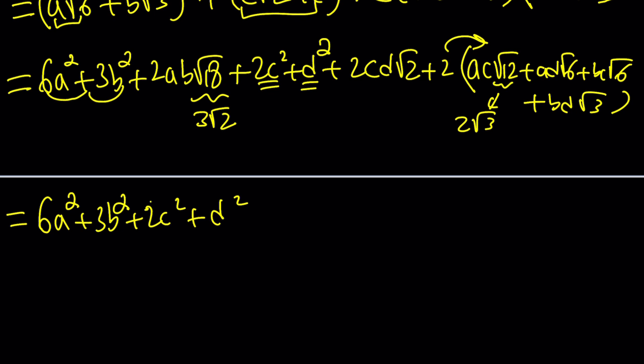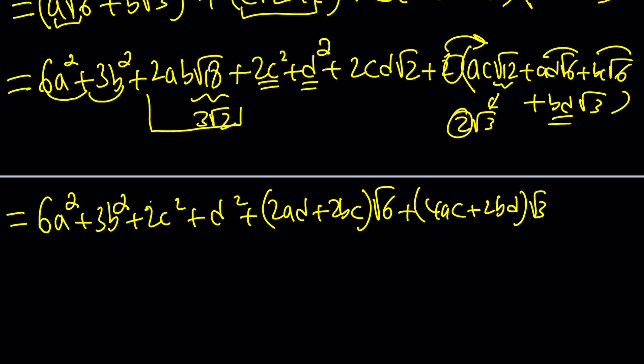Let's go ahead and write the root 6s first. We have ad plus bc, but there's also a 2, so 2ad plus 2bc is the coefficient of root 6. Root 3 is going to come from 2ac, but you have to multiply that by another 2, which is 4ac, and then another root 3 is going to come from here, 2bd. And there's two more terms, the root 2s and the constants. We have 6ab root 2 and then the 2cd root 2, and the constant term.